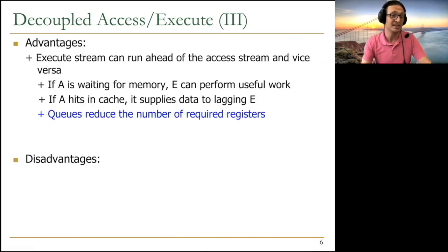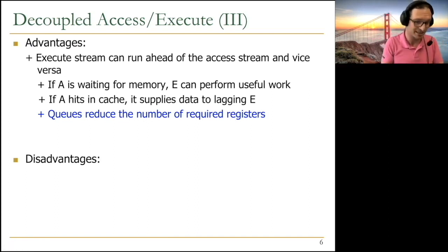So the big advantage is execute stream can run ahead of the access stream and vice versa. If the access processor is waiting for memory, execute processor can perform useful work. If access processor, for example, hits in the cache and it's not waiting for memory, it supplies the data to the lagging execute processor. Usually the memory accesses take longer. So usually execute can perform useful work, independent instructions while the access processor is waiting basically.